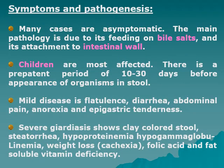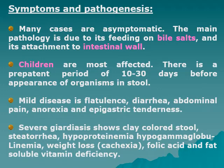Symptoms and pathogenesis: Many cases are asymptomatic. The main pathology is due to feeding on bile salts and attachment to the intestinal wall. Children are most affected. Infection can begin within the first year of life if the child receives artificial feeding rather than breastfeeding, which provides immunity through the first and possibly second year of life.